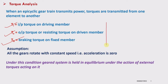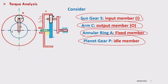We consider only the external torques acting on the system. The input member, sun gear, is connected to an external member, so it will experience a resisting torque. The fixed ring A is exerting a resisting torque on planet P. So these are the external torques: Ti, To, and Tb. Planet P is not connected to any external member, so it will not transmit external torques — remember this.